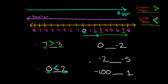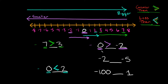Now let's do some examples with negative numbers. We're going to compare 0 and negative 2. Which number is bigger — 0 or negative 2? Well, 0 is bigger because it is further to the right on the number line. I want to eat the bigger number, so I'm going to make my mouth face this way because 0 is bigger than negative 2. You would read your answer as: 0 is greater than negative 2.